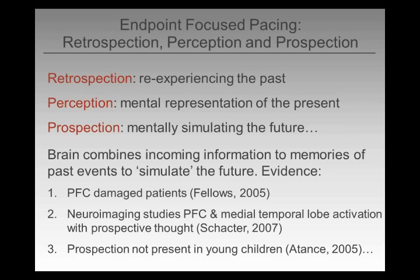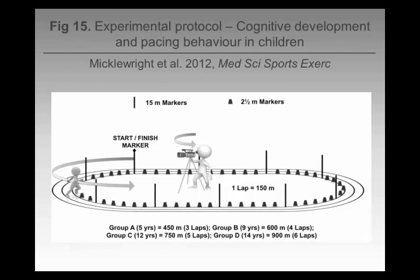One interesting thing is that young children struggle with prospective thought — they don't have the cognitive capabilities to engage in it. This got us thinking: why don't we try to measure this in children? Why don't we try to see whether or not children can perform anticipatory pacing?